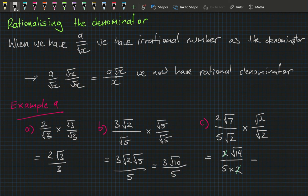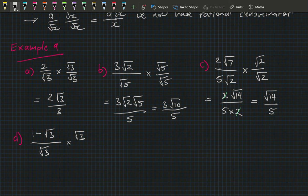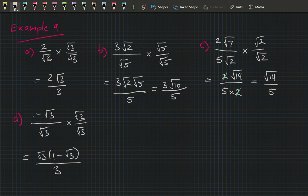Part d: 1 minus square root of 3 all divided by square root of 3. Using the distributive law, multiply by root 3 over root 3. The denominator becomes 3, and the numerator is root 3 times (1 minus root 3). Expanding: root 3 times 1 is root 3, and minus root 3 times root 3 is minus 3, giving root 3 minus 3 all over 3. Despite all the 3s, there's no further simplification.